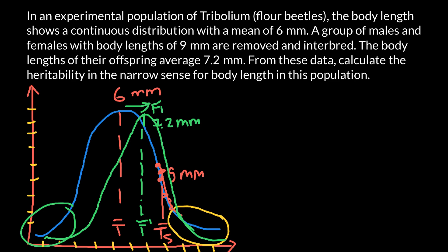We have all the data. We drew a picture, so now it would be easier for you to understand the solution of this problem. First of all, let's find the selection differential. It is the difference of the base population mean and the mean of the selected parents. So we use S for selection differential, which equals the mean of the selected parents minus the mean of the base population. In our problem, this is 9 minus 6, which is 3.